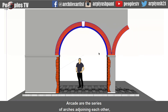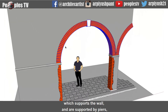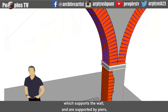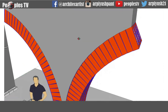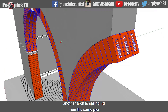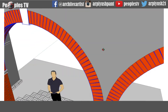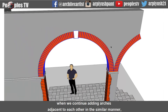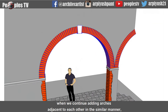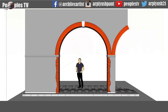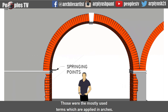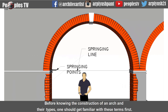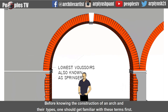Next is arcade — arcades are a series of arches adjoining each other which support the wall and are supported by piers, as you can see in the current model. Another arch springs from the same pier. When we continue adding arches adjacent to each other in a similar manner, it forms an arcade. Those were the mostly used terms applied in arches, which one should get familiar with before knowing the construction of arches and their types.